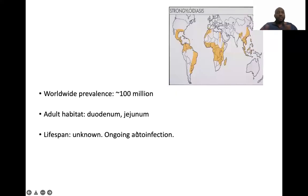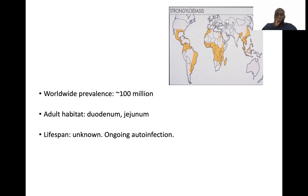Its worldwide prevalence is approximately 100 million. It inhabits the duodenum and jejunum in adult form. It is unknown how long it can persist in terms of lifespan, because of an ongoing auto-infection which we will see in a moment.